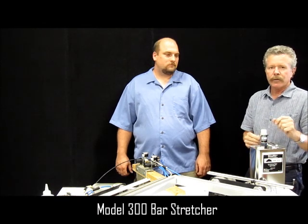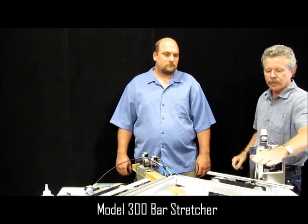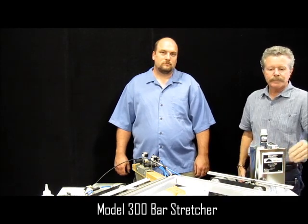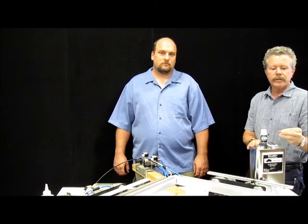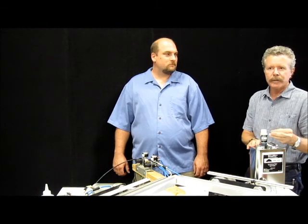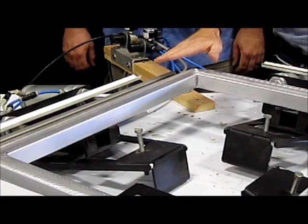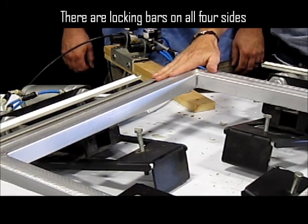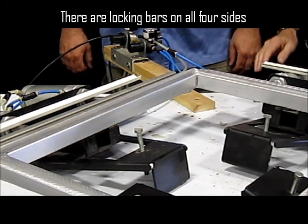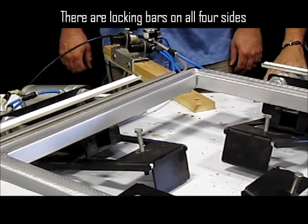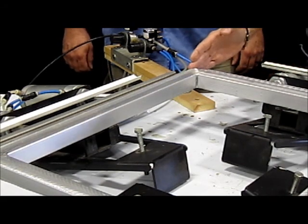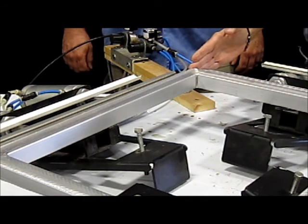We're also going to be talking about our Model 300 stretcher, which is a tabletop model for stretching rigid frames. It's a bar system. Let's take a little closer look at it. With this stretcher, as you can see in this video, we have locking bars that are on all four sides. These are set up so that they come in almost about to the corner of your frame, the outside dimension.